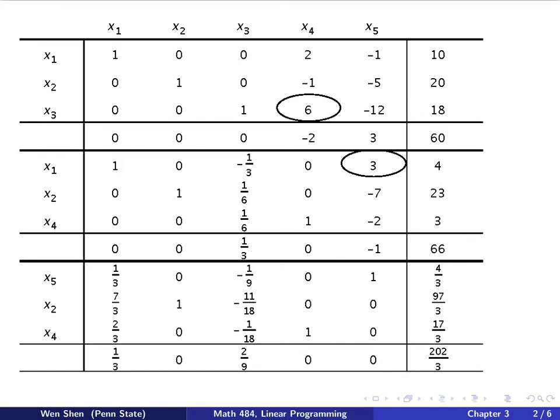Once you have done that step, you check the coefficient here. The coefficients are 1/3 and 2/9 — they're both positive. And then you conclude that you can stop. The optimal is reached. So you can pause and take a look at this tableau and review it. Then you can draw your conclusion just from the last tableau.